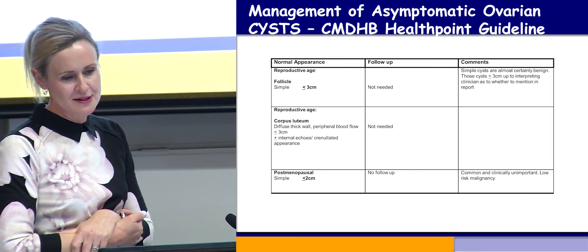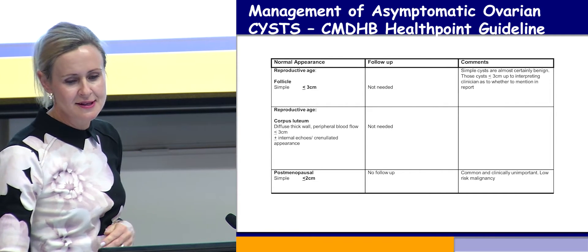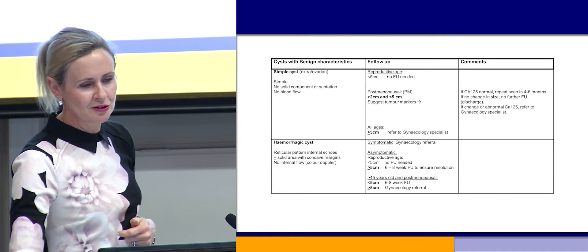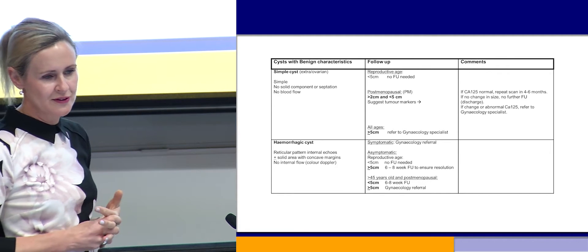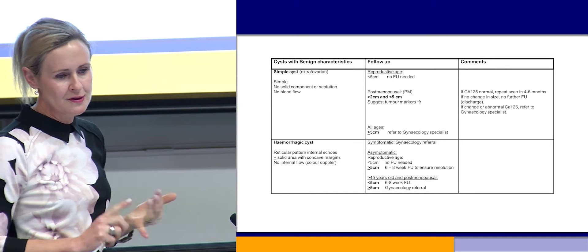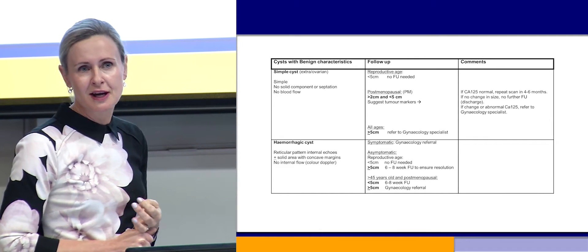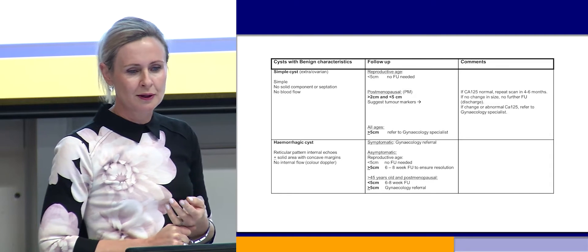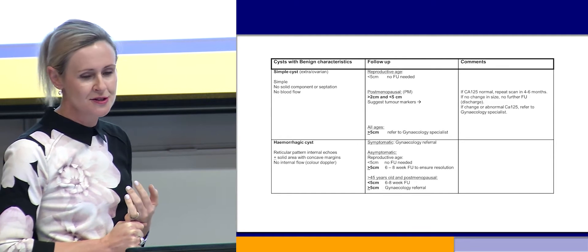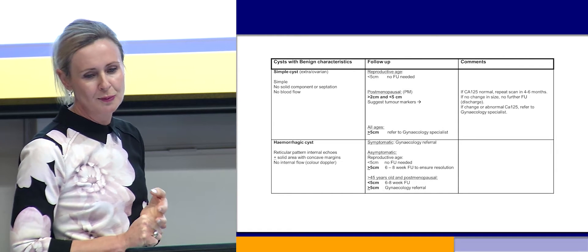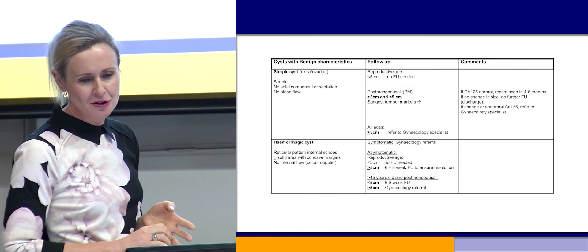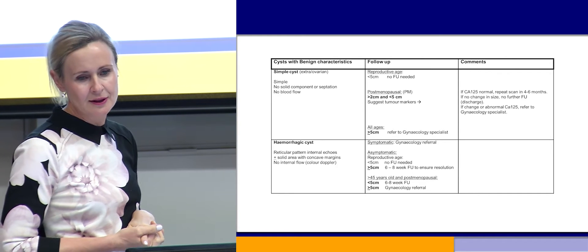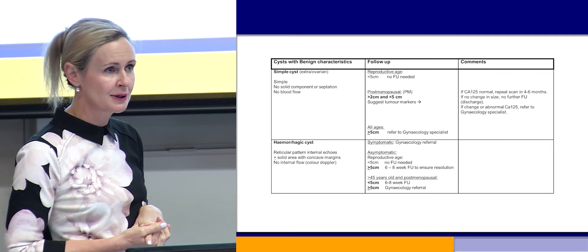In a postmenopausal woman, a simple cyst less than or equal to 2 centimetres is common, unimportant, and does not need referral or follow-up. For larger cysts with benign characteristics — a simple cyst with no solid component, septations, or blood flow — in the reproductive age group less than 5 centimetres needs no follow-up or referral. In a postmenopausal woman between 2 and 5 centimetres, do tumour markers. If normal, repeat the scan in 4 to 6 months. If no change, no action required. If it has grown or CA125 is abnormal, referral to a gynaecologist is needed.